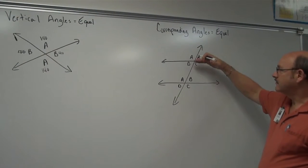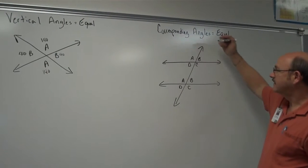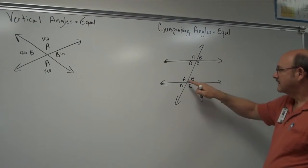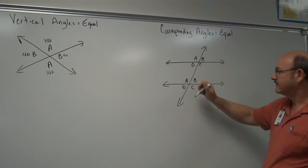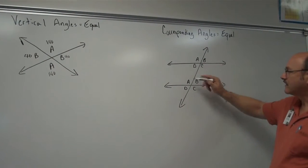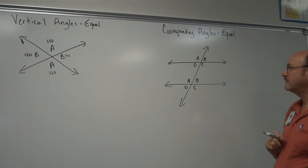So we have angle A on top of this line and to the left of the transversal. Down here, angle A would be on top of the line and to the left. So angle A here and here are corresponding angles and they're equal. They're going to have the same measure.